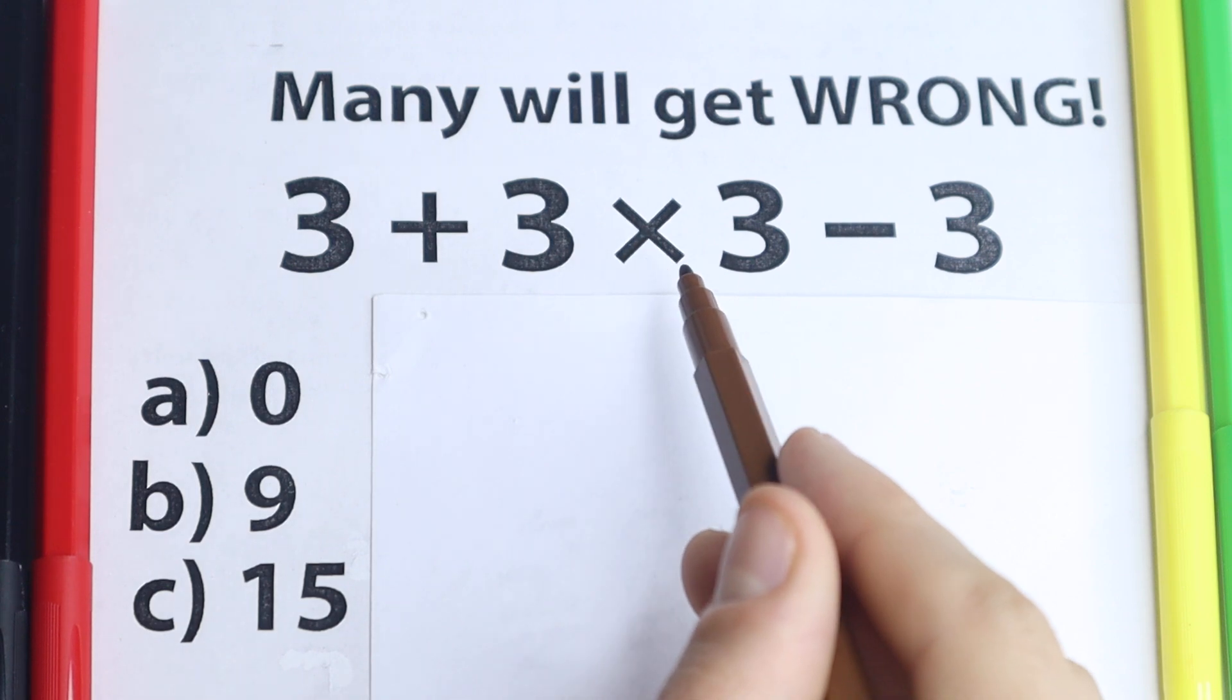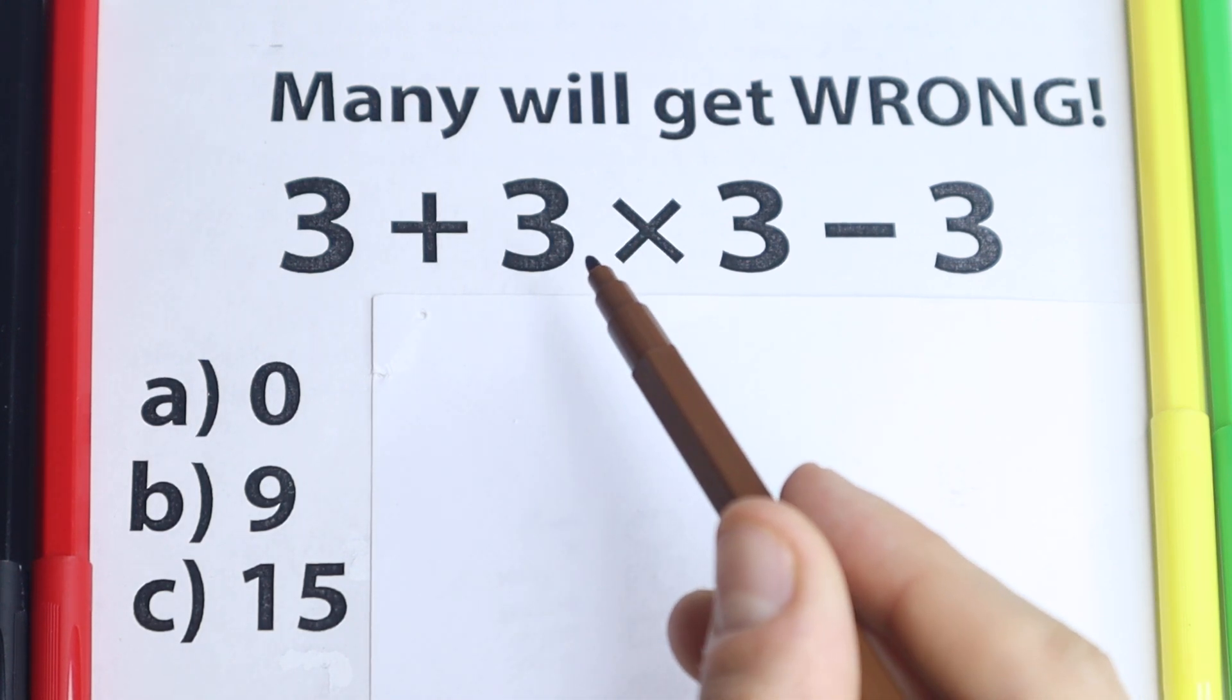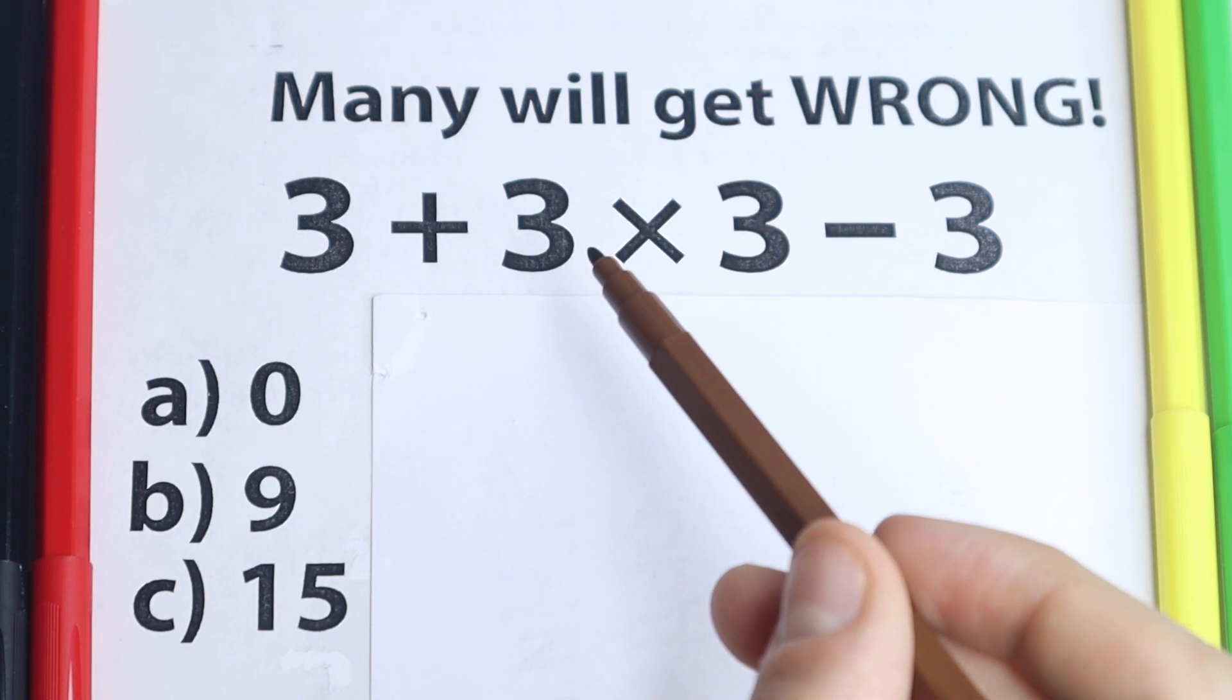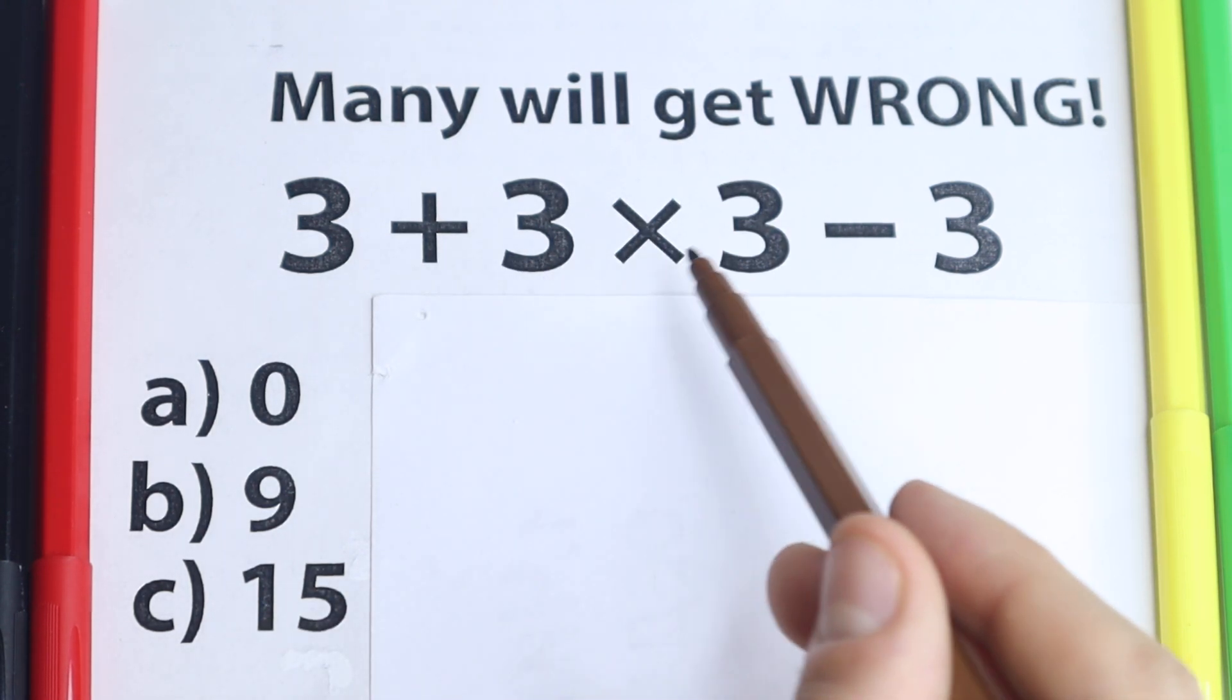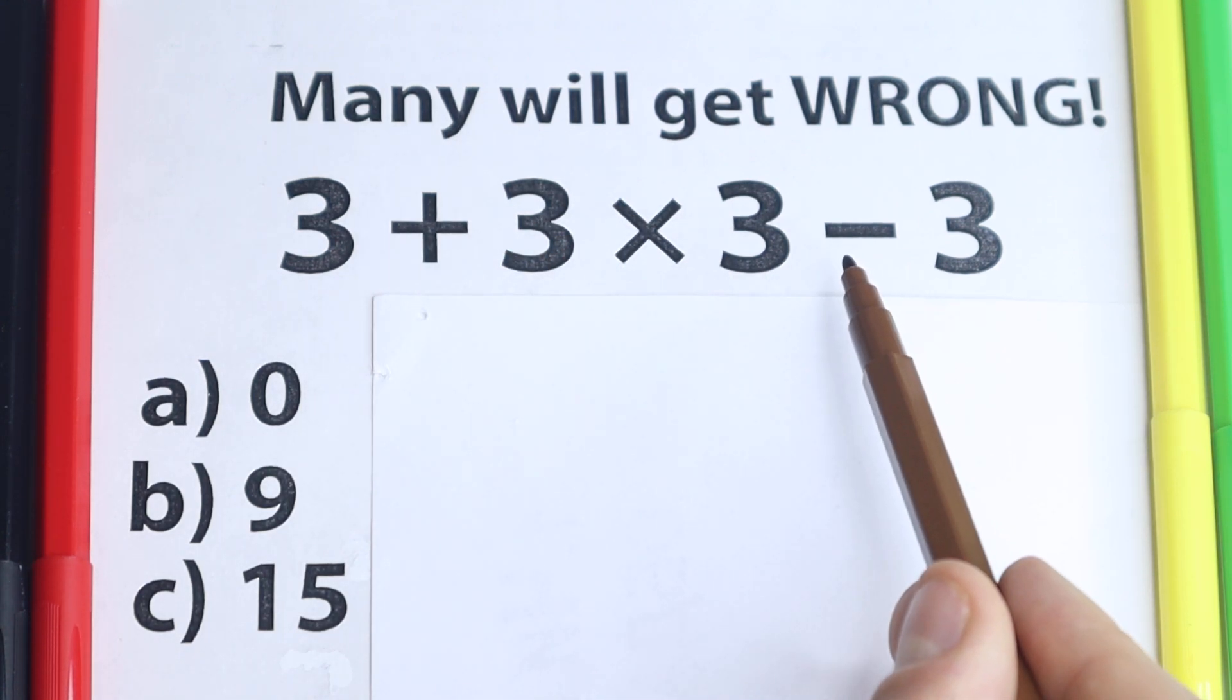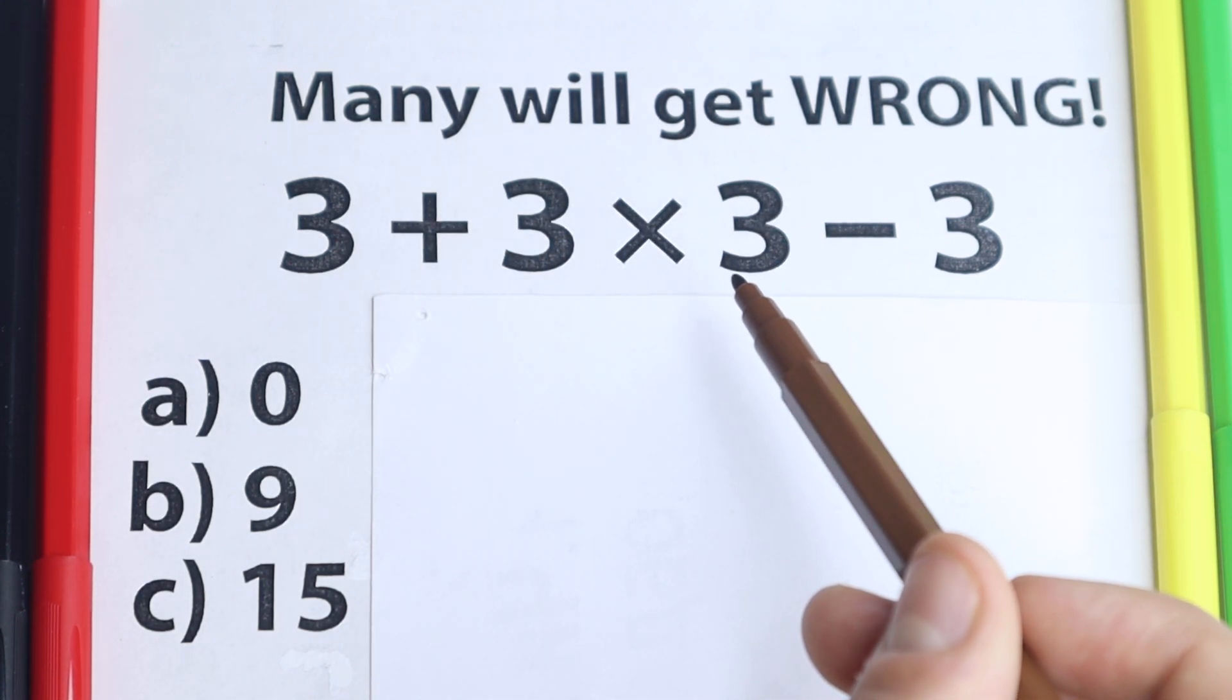We have 3 plus 3 times 3 minus 3. Very simple on the first side. We have addition, multiplication, subtraction. Everyone learned these operations in the third grade. This is all times 3. On the first side this is a very easy question.